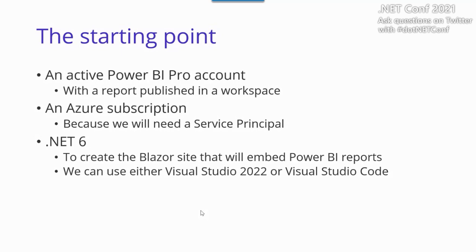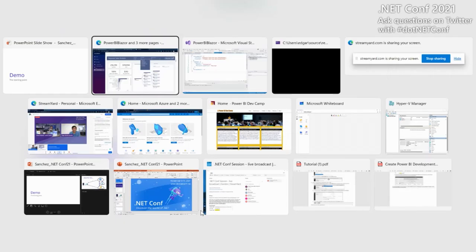What do we need to do this? First, a Power BI Pro account — a Power BI portal service working for us. Second, an Azure subscription, because we're using a service principal to call the Power BI services, and a service principal is a concept that comes from Azure. Finally, .NET 6, because that's what we'll use to create the Blazor site and embed the reports. You can use Visual Studio 2022 or Visual Studio Code.